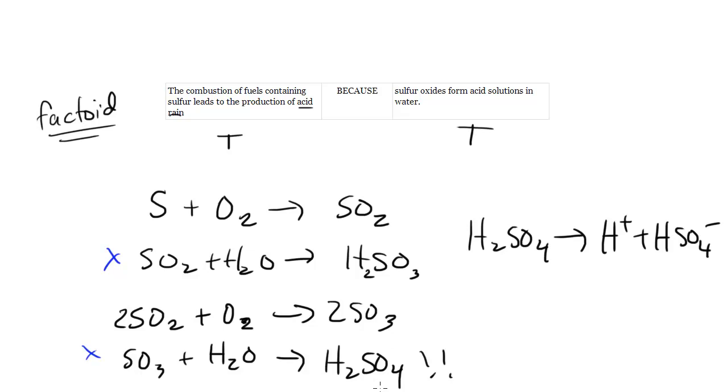Now we ask the question, is the first an explanation, or excuse me, is the second an explanation for the first? And yes, right? This tells us why acid rain is produced when you burn sulfur fuels because the sulfur oxides form and therefore create acid solutions.